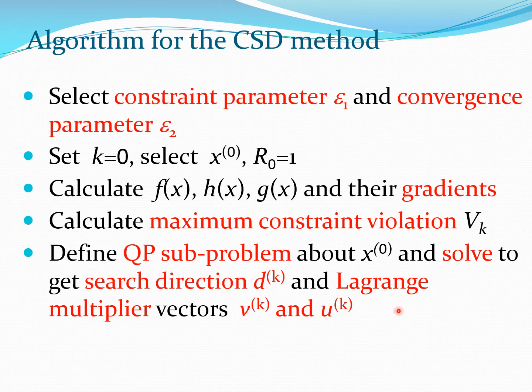Then you define the QP sub-problem at this point x^(0) you have selected as the starting design. Solve to get the search direction d^(k) and Lagrange multipliers v^(k) and u^(k). Now of course if you are at point k here, this x^(0) would become x^(k).